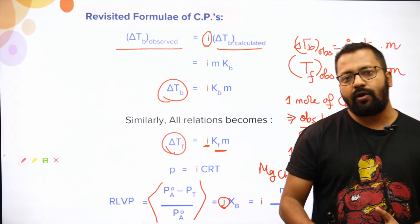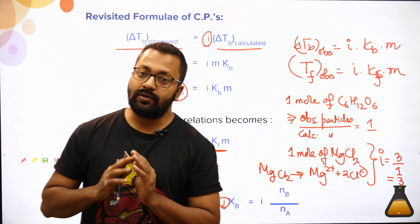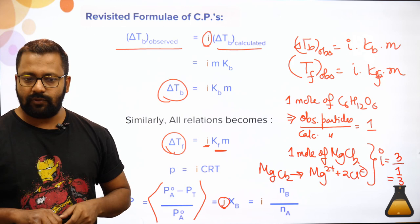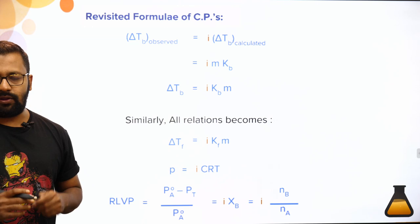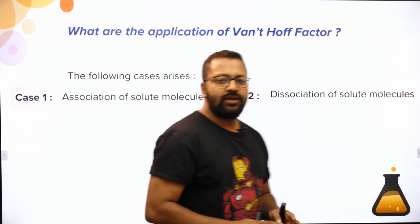So the Vant Hoff factor is the ratio of the number of particles produced upon association or dissociation divided by the original number of particles taken. For example, for MgCl₂ it is 3:1. Let's understand in what cases we use the Vant Hoff factor and the general method for using it.